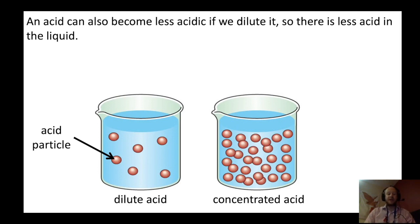Whereas in the dilute acid, there are less acid particles. The concentrated acid is going to be more acidic because there's more acid particles in the same volume. Whereas the dilute acid is going to be less acidic because there aren't as many acid particles there.